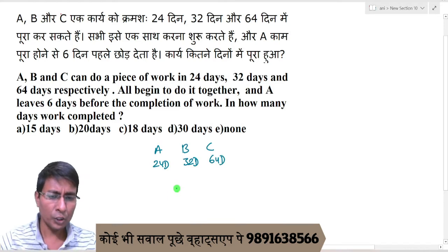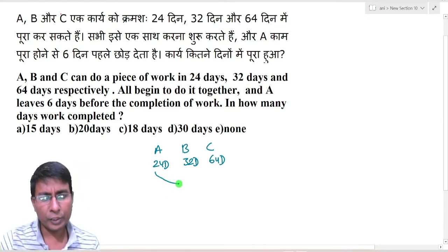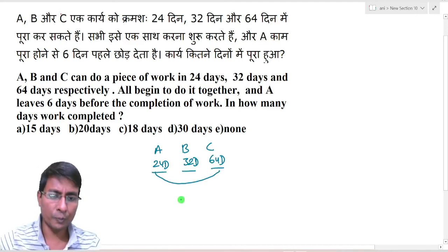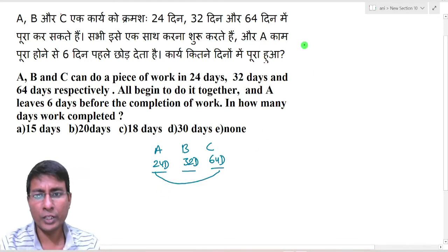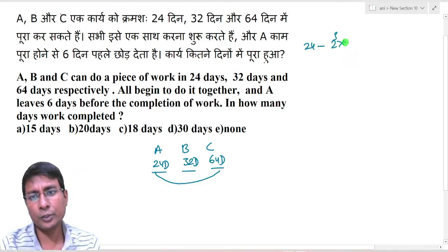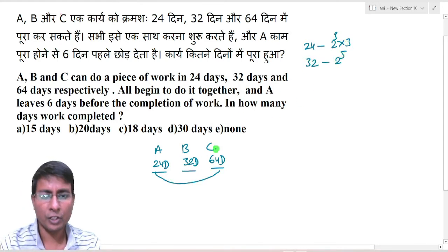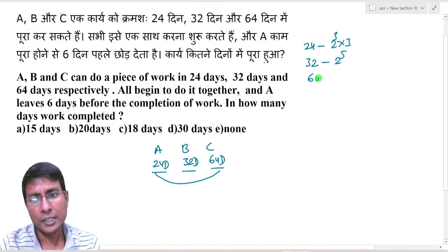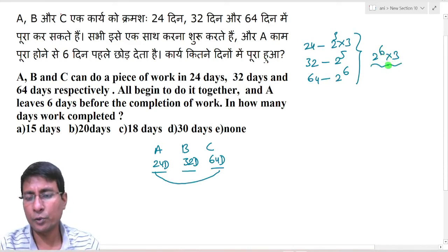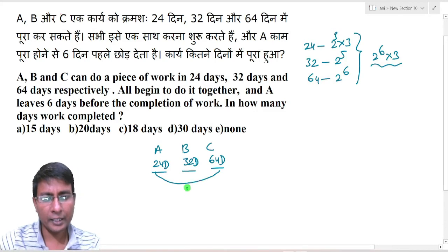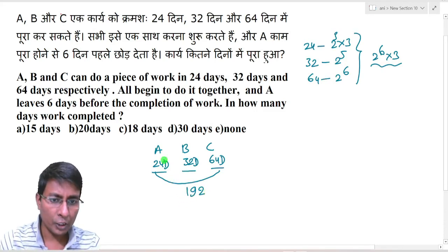The simple approach here is to use work units in terms of LCM. So the LCM is calculated as: 24 = 2³ × 3, 32 = 2⁵, and 64 = 2⁶. This gives us LCM = 2⁶ × 3 = 64 × 3 = 192. So the total work unit is 192.